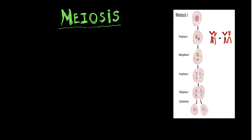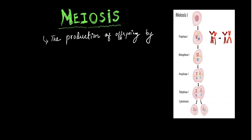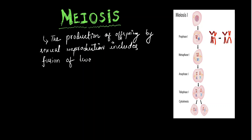What is meiosis cell division and what are its phases? In meiosis, the production of offspring by sexual reproduction occurs. The production of offspring happens by the fusion of two gametes — that is, male gametes and female gametes.